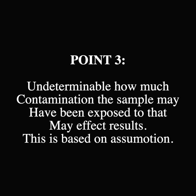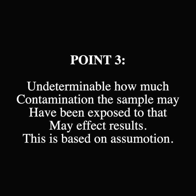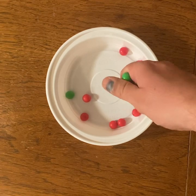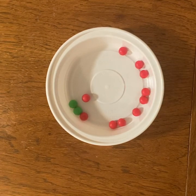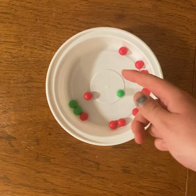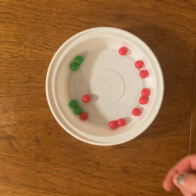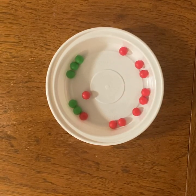Point 3: finally, it is undeterminable how much contamination the sample had been exposed to throughout its history, which causes negligence. If someone came along and threw in red or green marbles into the bowl when you were either present or not present, you would have to say that the test was not reliable. You would have to once again assume that no contamination had actually happened, which may very well be impossible.